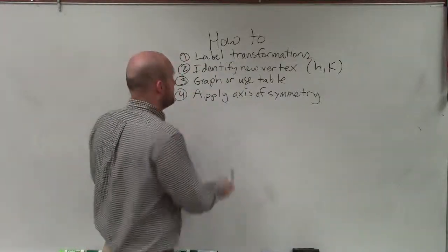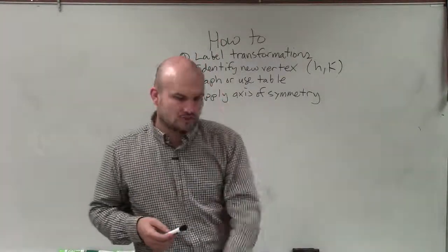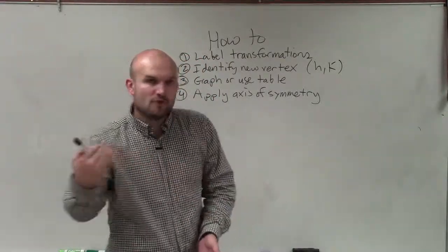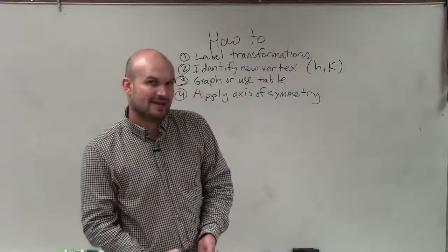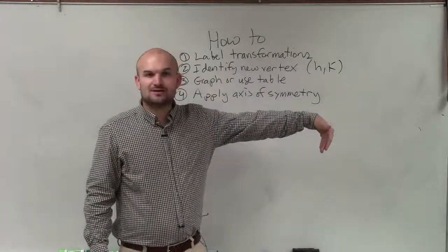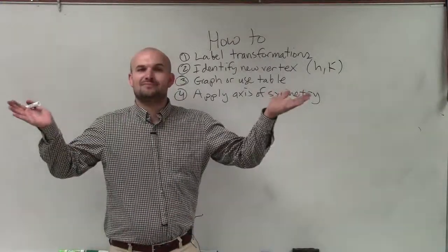So you choose those two points and then what we use is apply the axis of symmetry. We know that the axis of symmetry goes through the vertex. So basically whatever you graph on one side, you can flip over the axis of symmetry and recreate those exact same points. So I plot three points to the right or to the left and then I flip them over the axis of symmetry. So then I finally get my V-shaped graph.